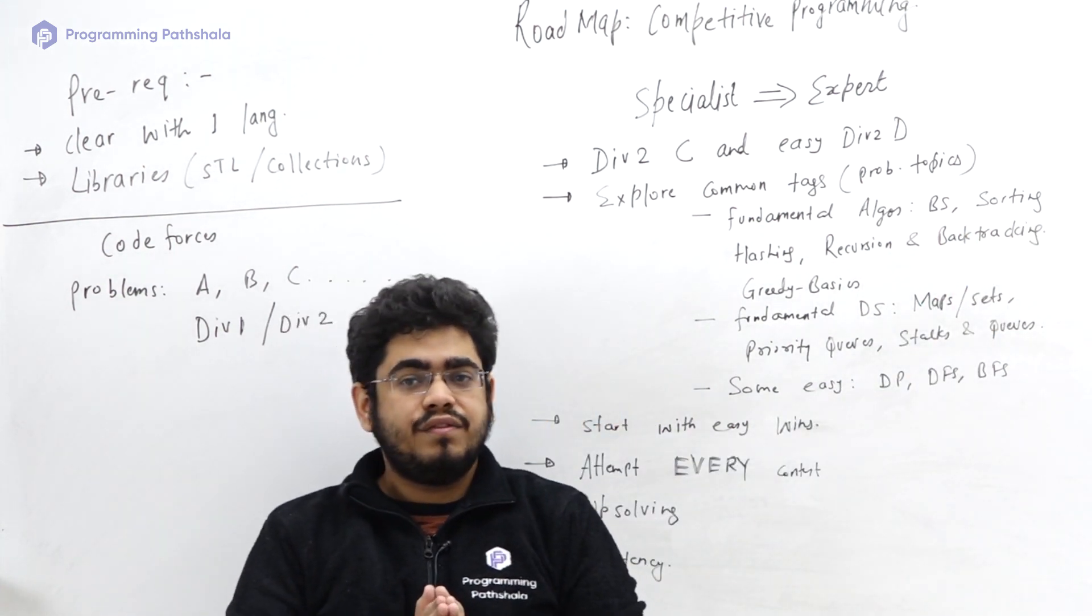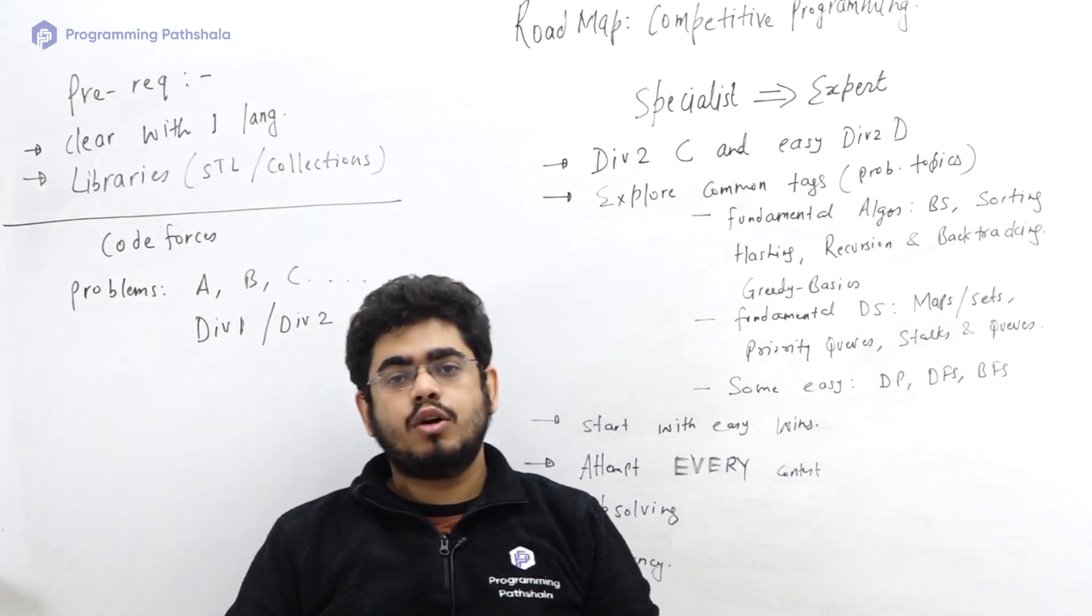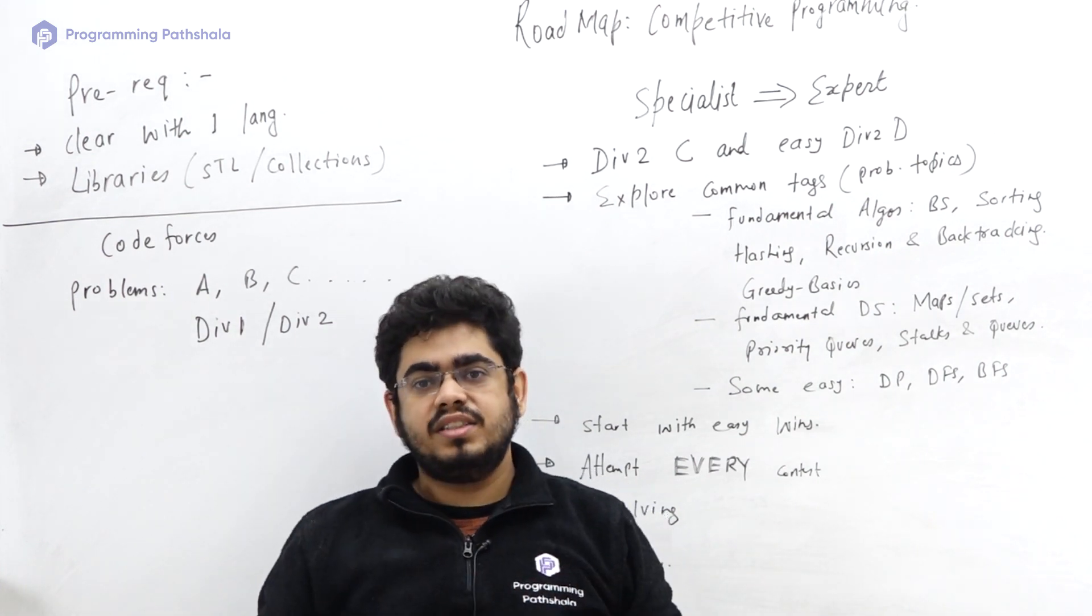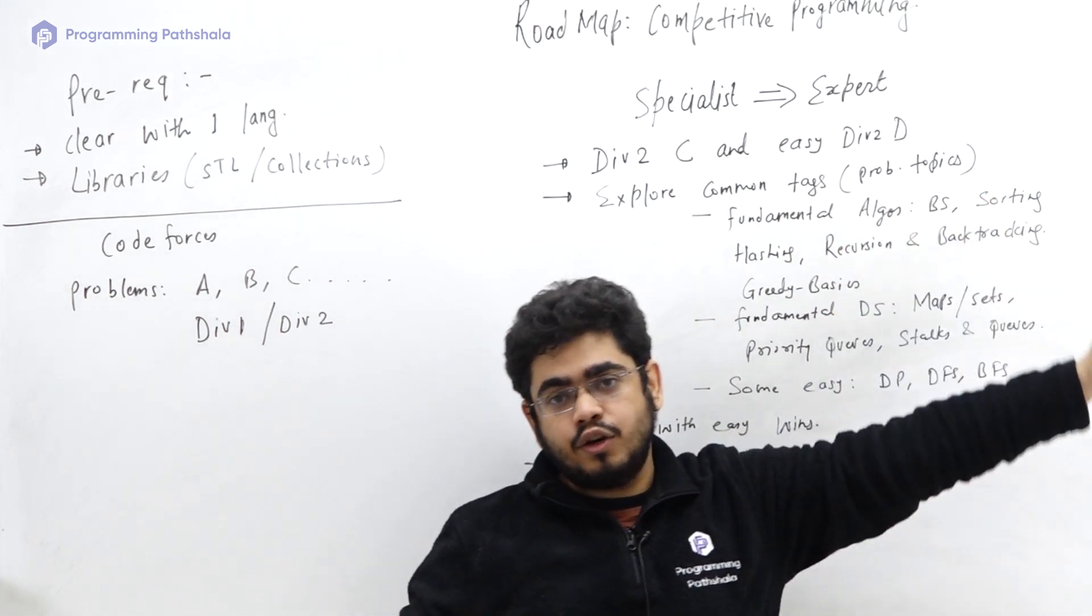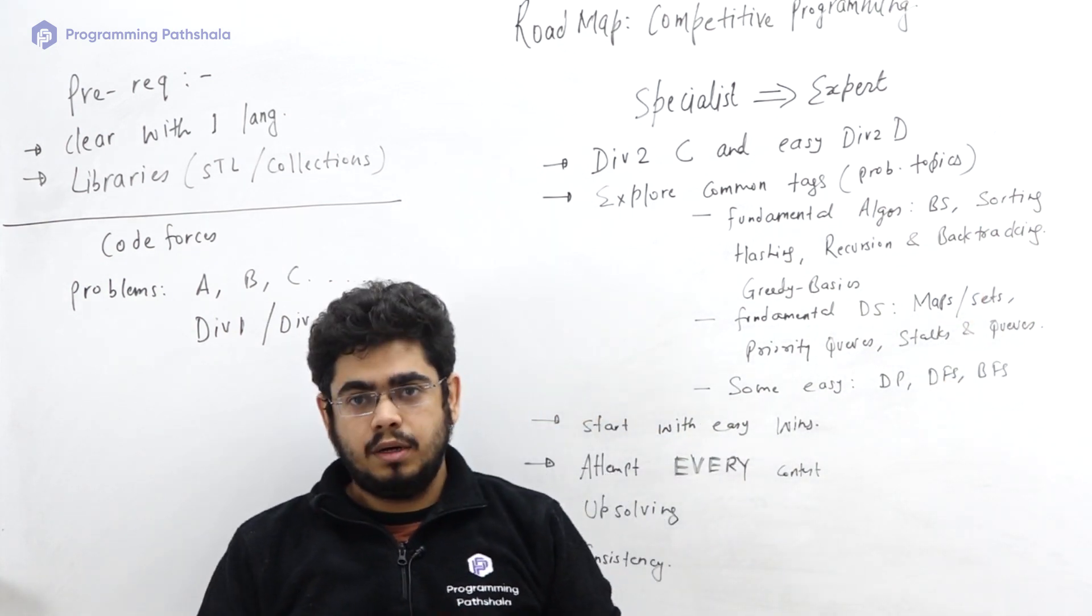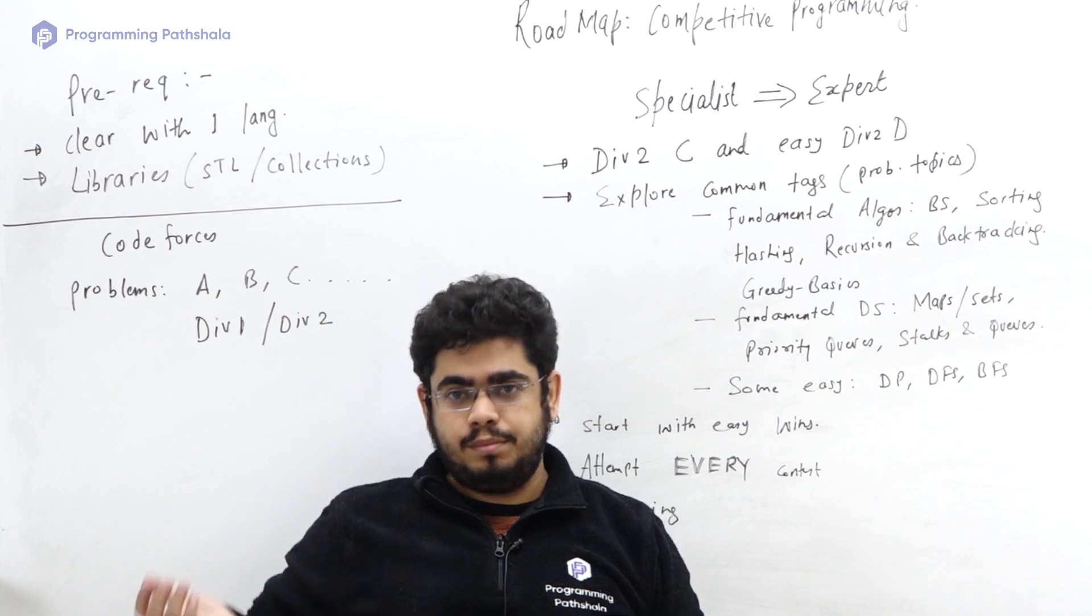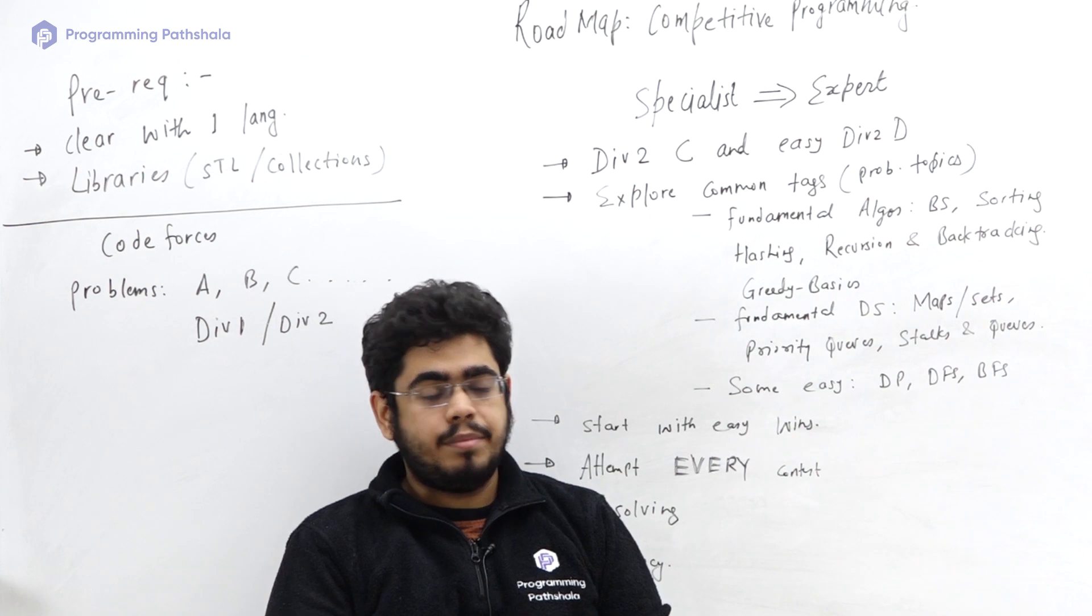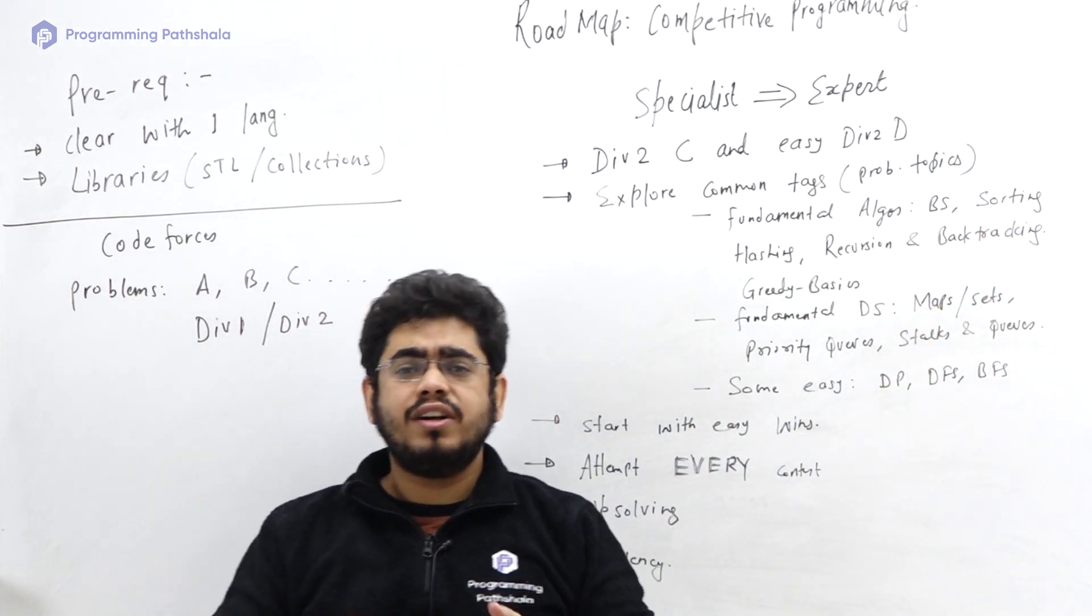Similarly in sorting also there could be a whole lot of varieties. For example, in sorting there is quick sort algorithm which uses partitioning technique. Partitioning technique is a two-pointer technique, so there comes a whole category of problems in two pointers. Similarly, the sorting technique merge sort uses divide and conquer. We have the inversion problem. Going up to the complete depth and breadth of these topics is definitely required, not just knowing the algorithms itself.